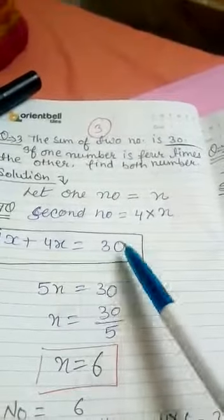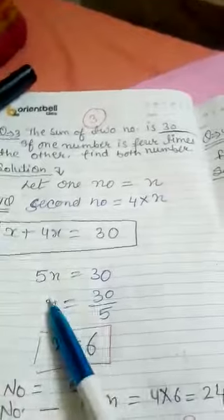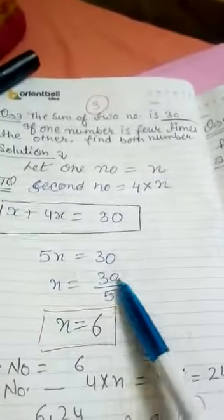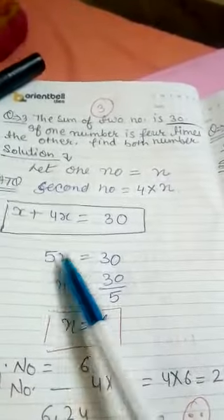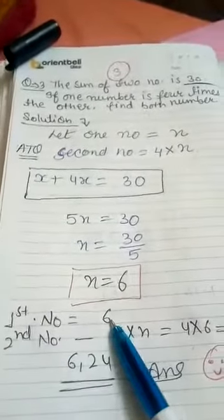Adding we get 5x = 30. Divide this by 5, because here it's multiplication, so it will come to division side. The number x, okay, first number is 6.